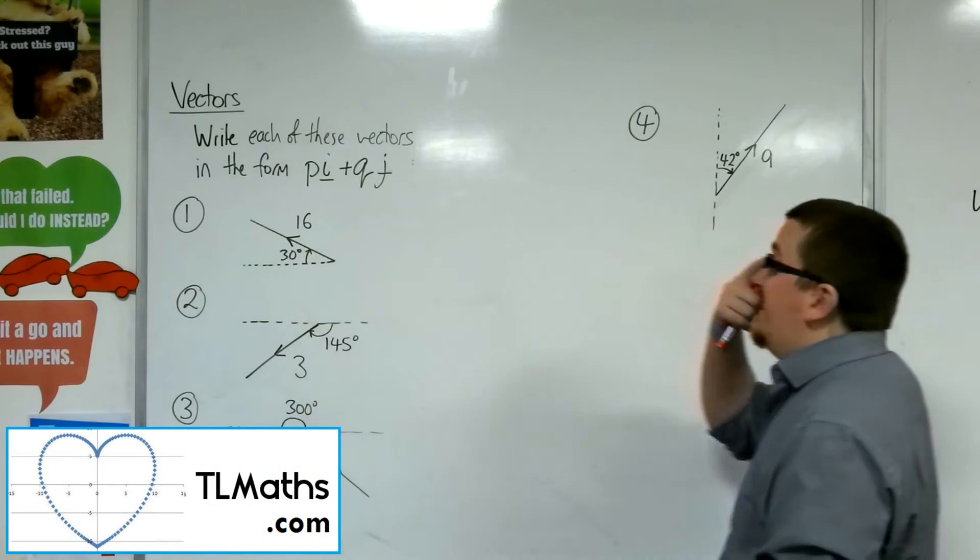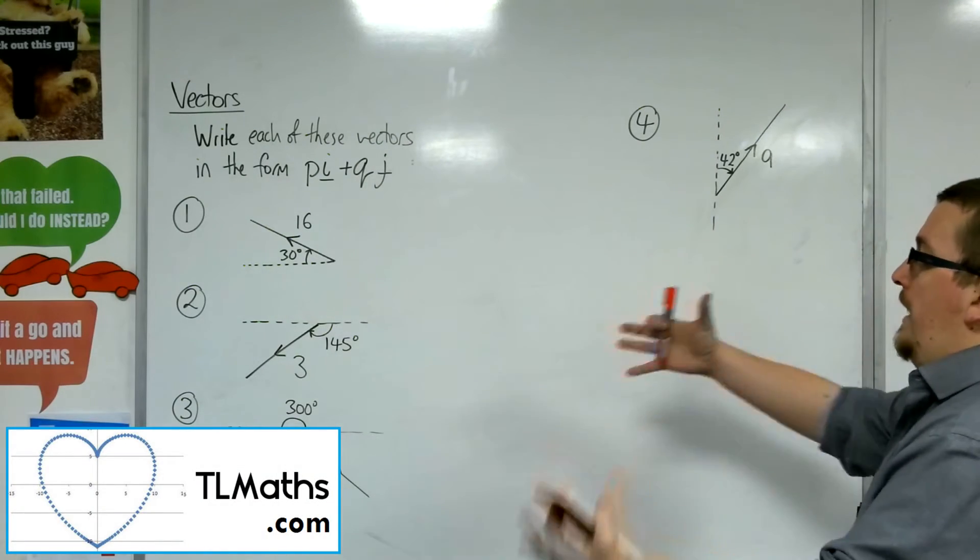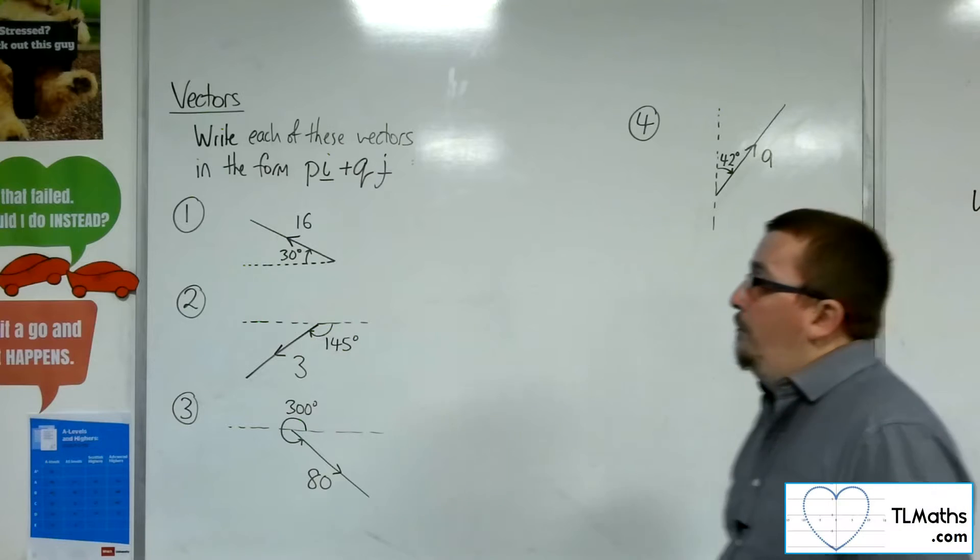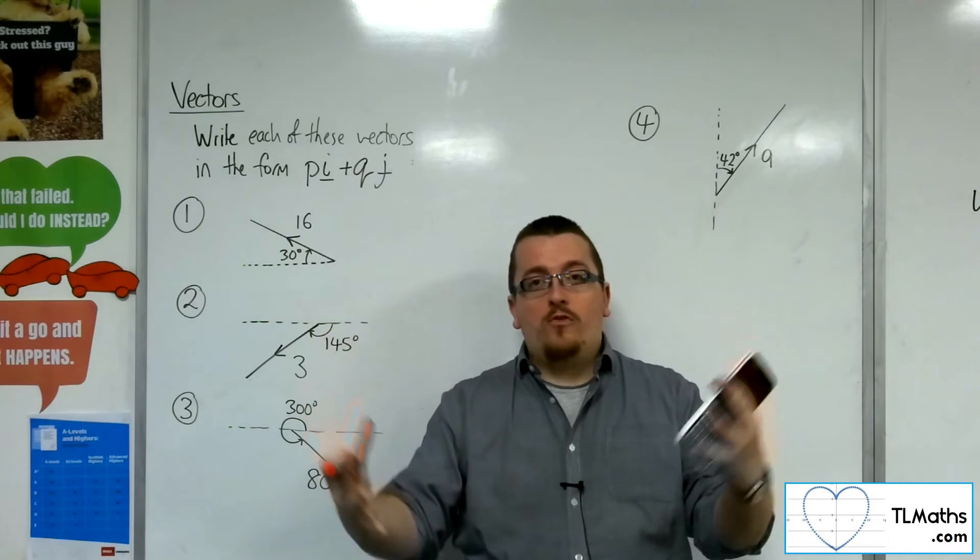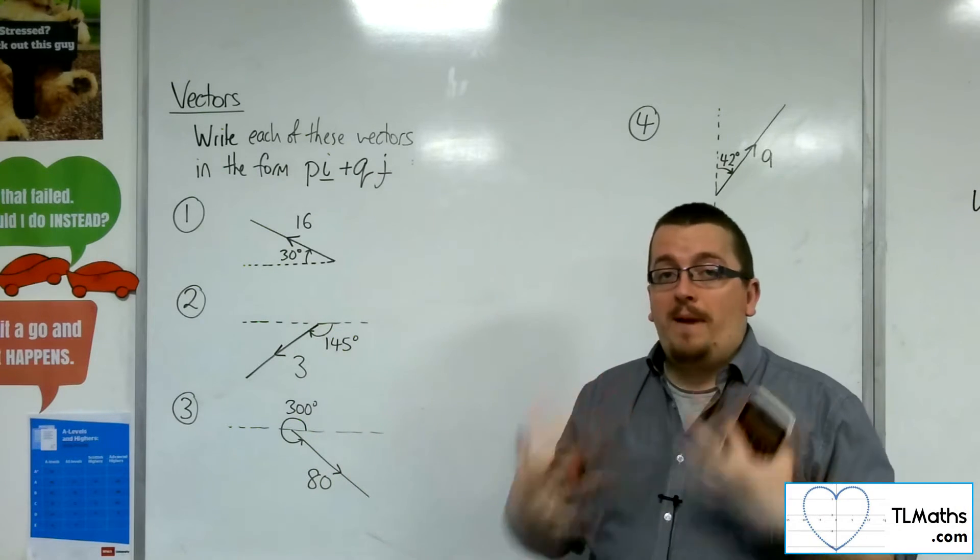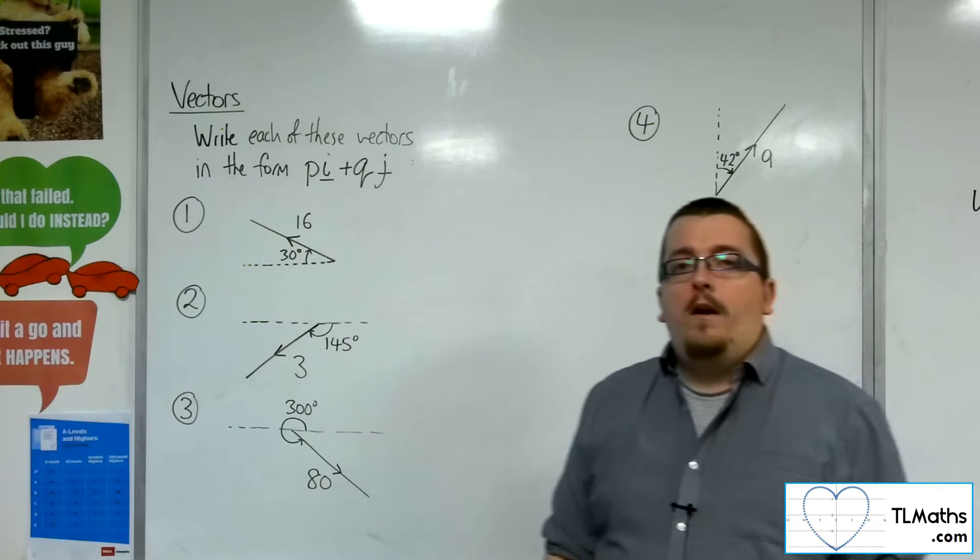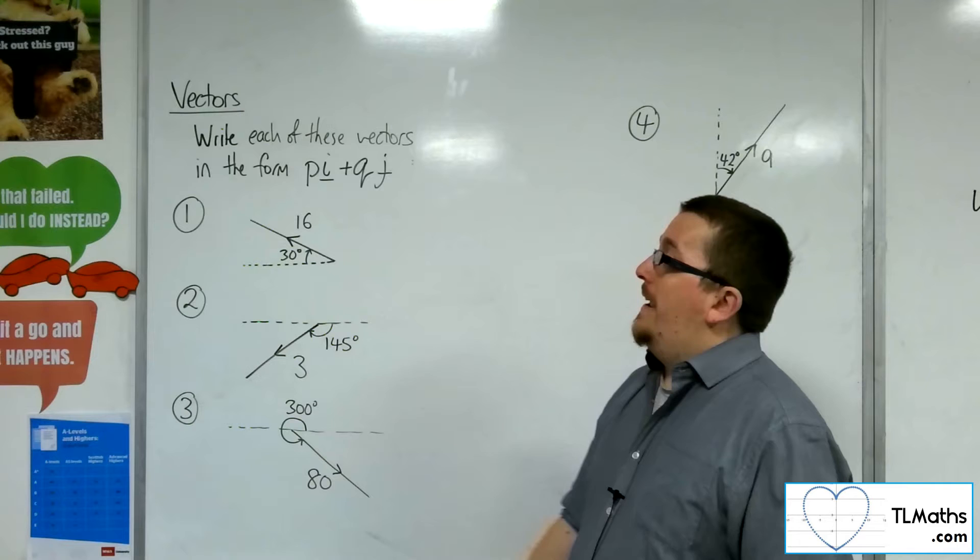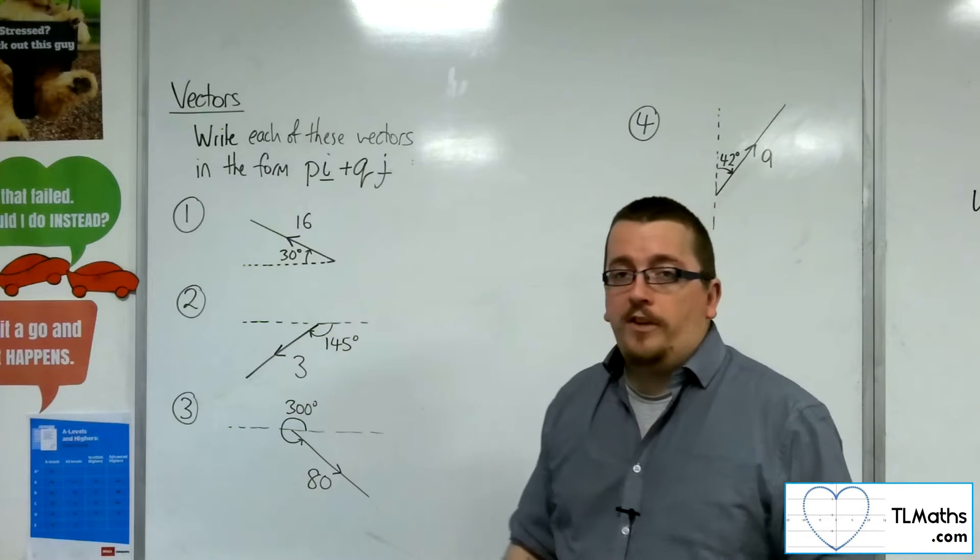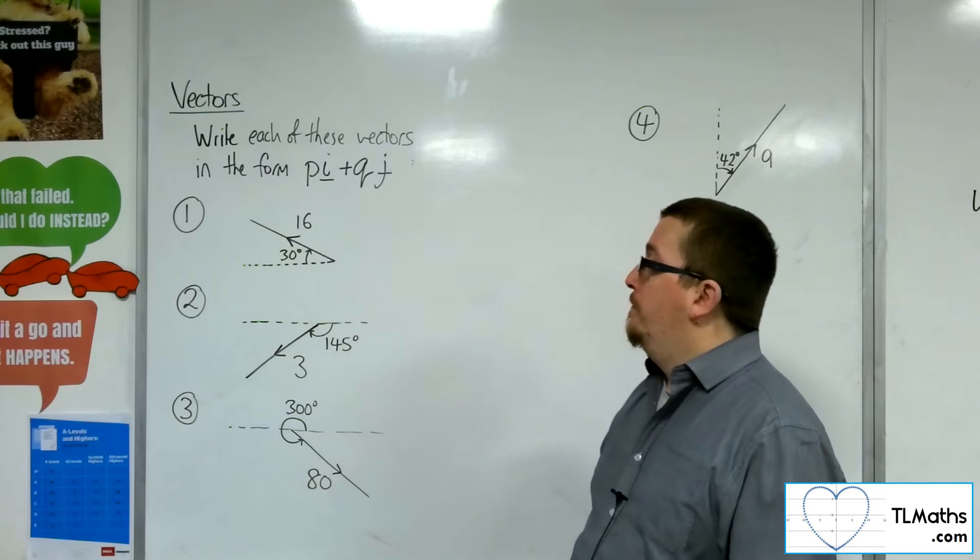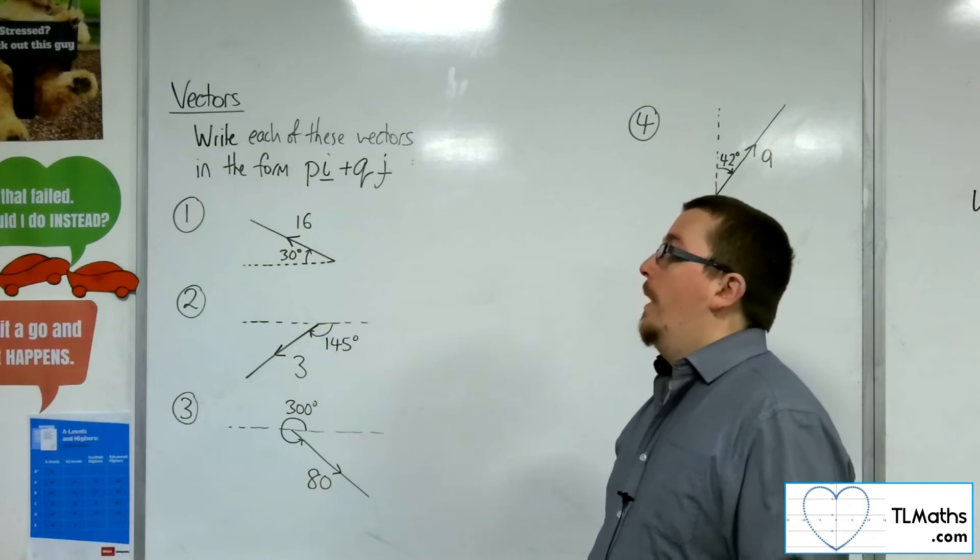Okay, so let's say I've got these four vectors. They've all been put into a diagram and I've been given the magnitude and their direction, and I need to figure out what the vector is in the form of pi plus qj, so in component form. So let's start off with number one.